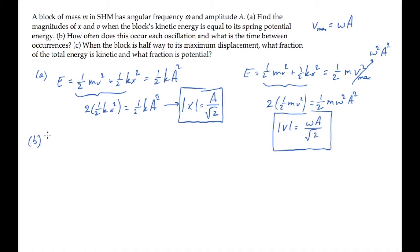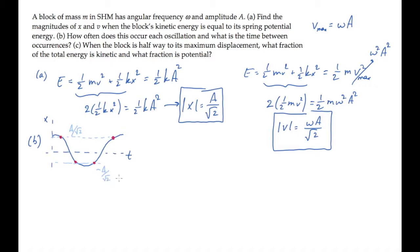Part B asks us how many times per cycle this occurs, and the time in between occurrences. If we plot a cosine wave, where this is the time axis and this is the position axis, we can mark the four locations where the magnitude of the position equals A over root 2. The top two values have a position of A over root 2, and the bottom two have a value of minus A over root 2. So we see there are four times per oscillation where the kinetic and potential energies are equal to each other.